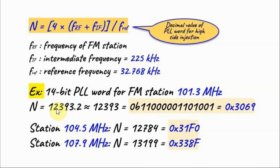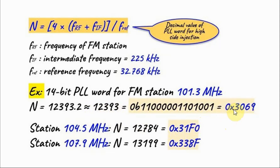As an example, we want to calculate the 14-bit PLL word for FM station 101.3 MHz. This is the calculated decimal value, this is the 14-bit binary value, and this is the hex value. And these are hex values for two more stations.